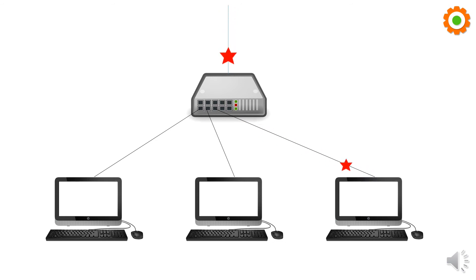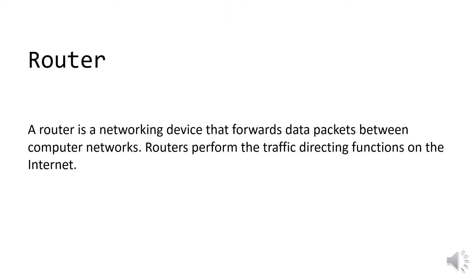So those are the key differences between hub and switch. With a switch, we have a more secure connection and unwanted duplicate packets are not generated. Now let us look at router. A router is a networking device that forwards data packets between computer networks and performs traffic-directing functions on the internet.